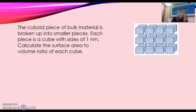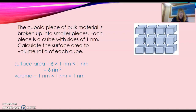We've got a big bulk material broken up into smaller pieces, and each piece has sides of one nanometer. Calculate the surface area to volume ratio of each cube. Your surface area is six nanometers squared and your volume is one nanometer cubed — nice and easy this time. The surface area to volume ratio is six to one, so it gets much bigger.